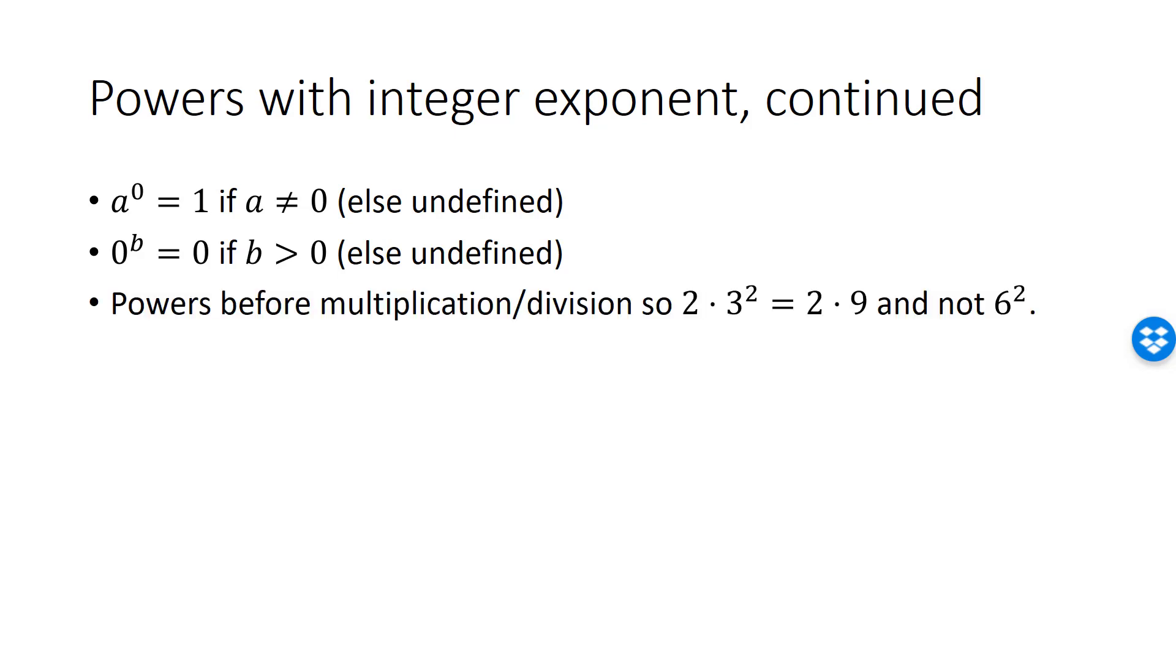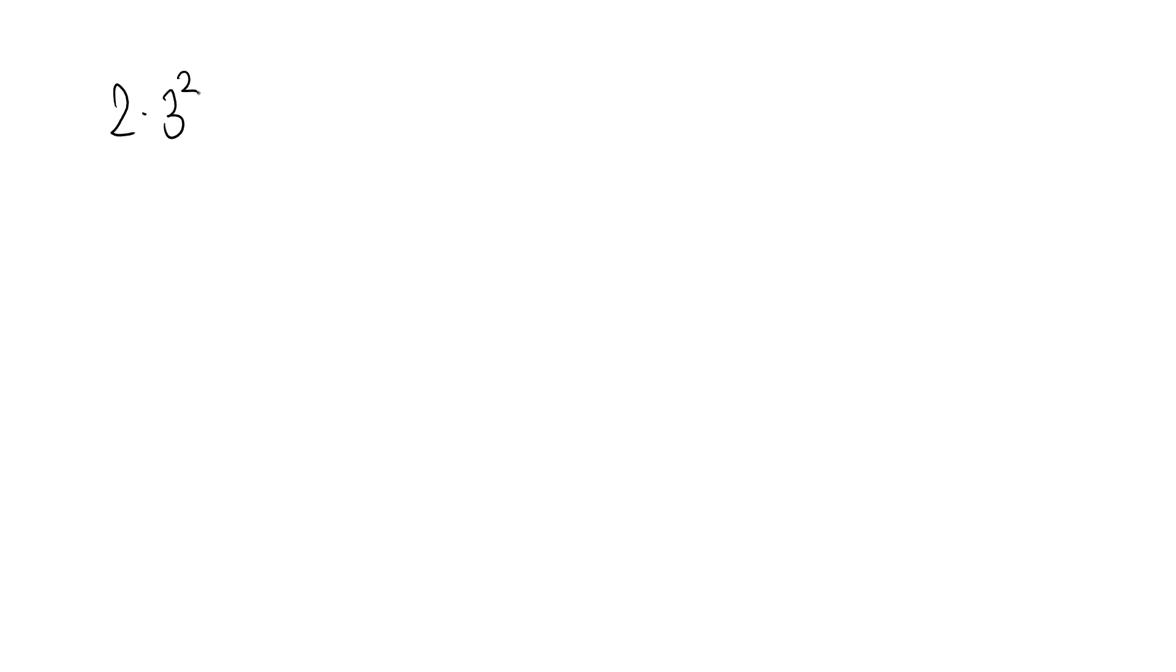The convention in mathematics is that we do exponentiation before multiplication and division, which you remember in turn goes before addition and subtraction. So 2 · 3² means 2 times 9, which is 18.